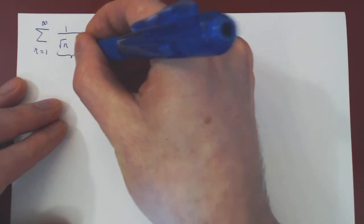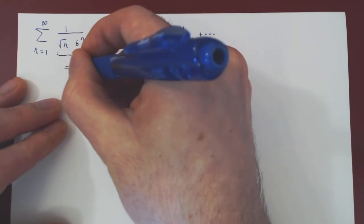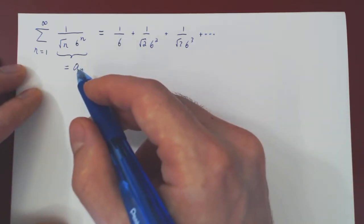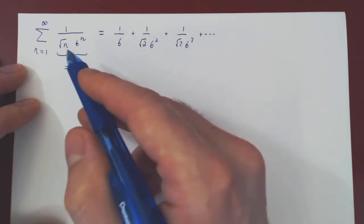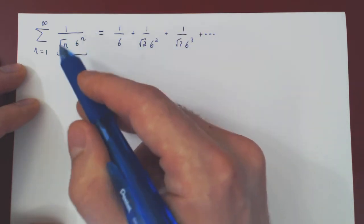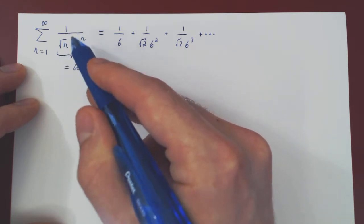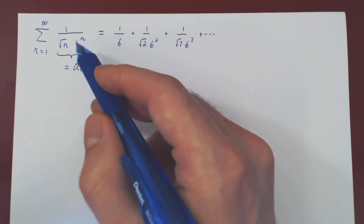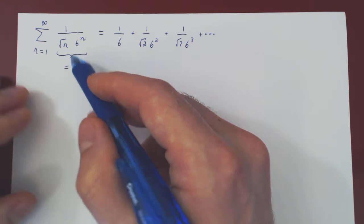So we're summing here the terms 1 over root of n times 6 to the n. This is the first sequence that we're trying to sum over, and we now want to compare this sequence with a simpler sequence. And if you look, part of a_n gives you a p series, 1 over n to the 1 half, part of a_n gives you a geometric series, 1 over 6 to the n. The question is, which one do we keep, which one do we drop?